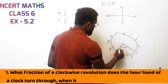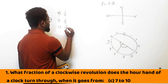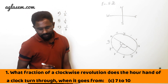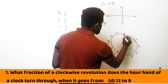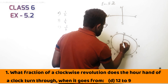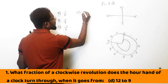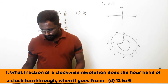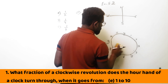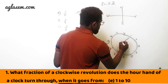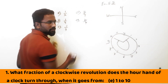7 to 10: from 7 to 10, this is again 1 by 4 of the revolution. Next, 12 to 9 in clockwise direction — the D part, it is 3 by 4. Then 1 to 10: the hand is going to 10, this is again 3 by 4 of the revolution.